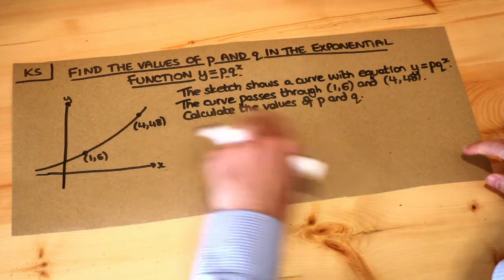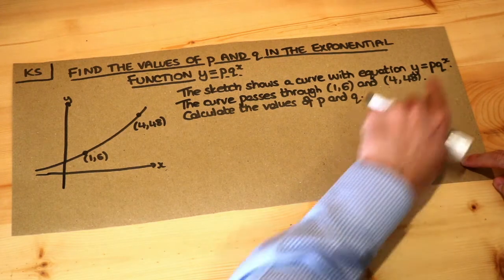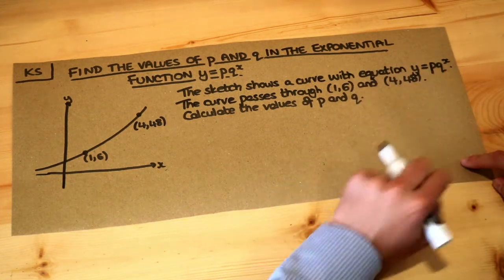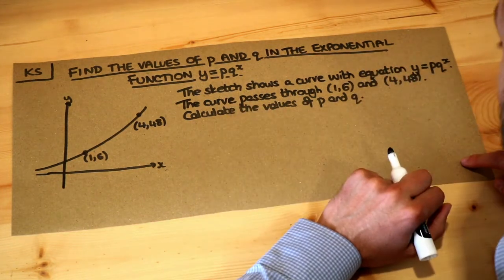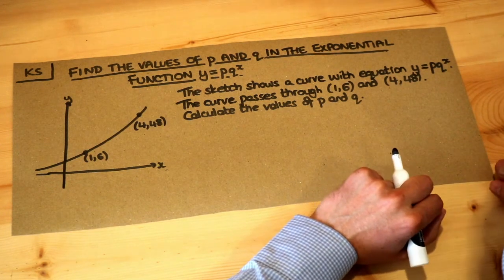This sketch shows a curve with equation y = p·q^x, where p and q are constants that we need to find. The curve passes through (1,6) and (4,48). Calculate the values of p and q.